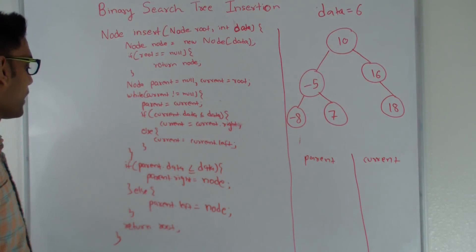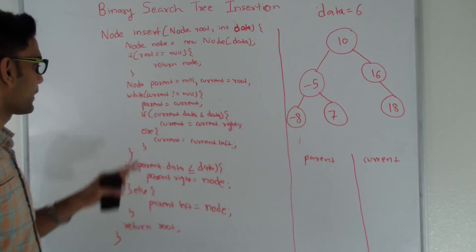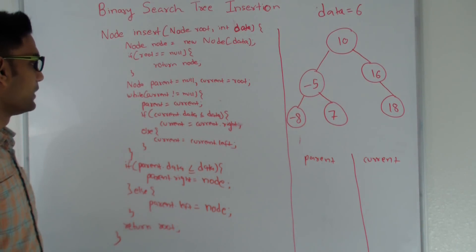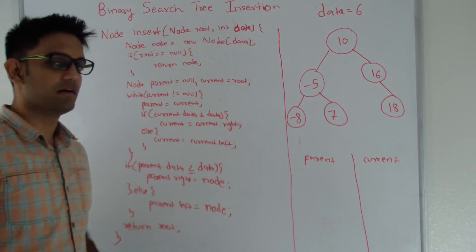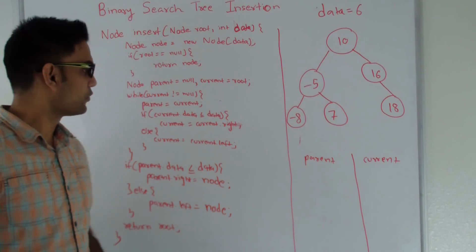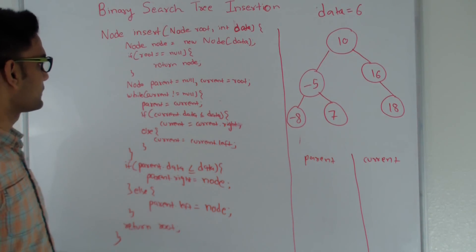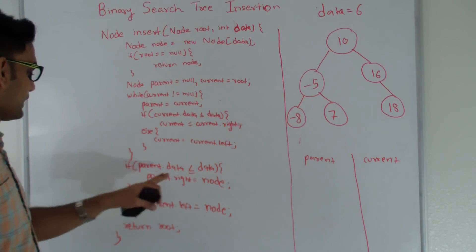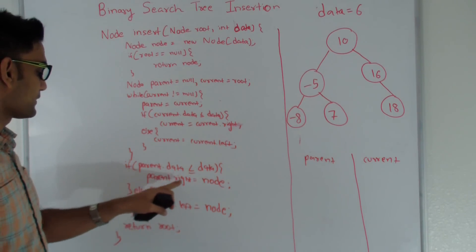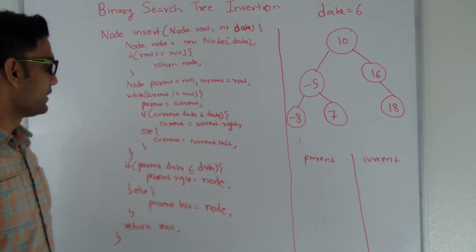Otherwise, we declare two variables: parent and current. We go through a while loop. By the end of this while loop, current becomes null and parent is the node whose left or right child will be this new node. Then it checks and makes either parent's right or left as the new node.